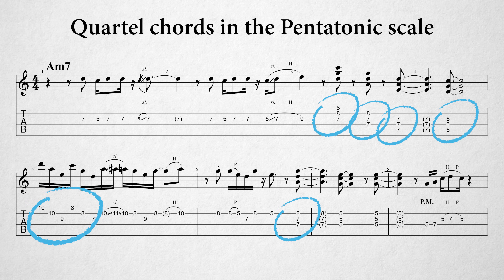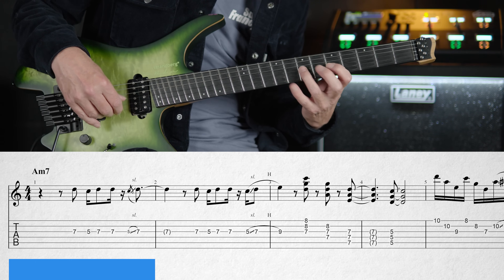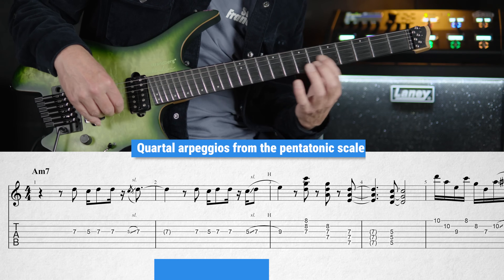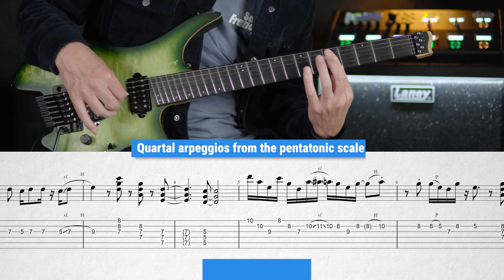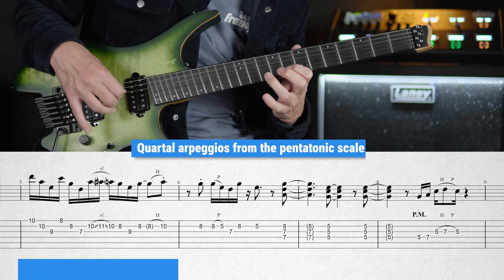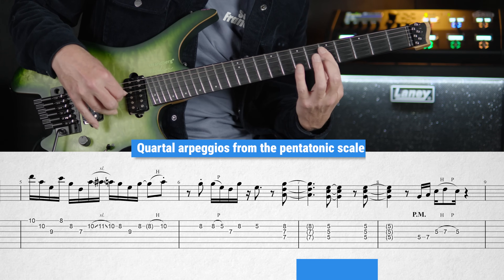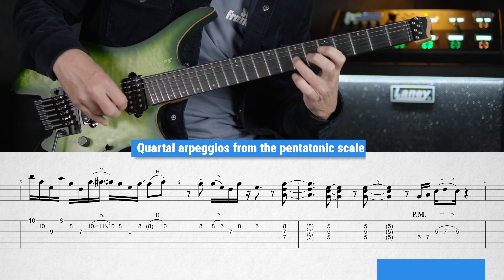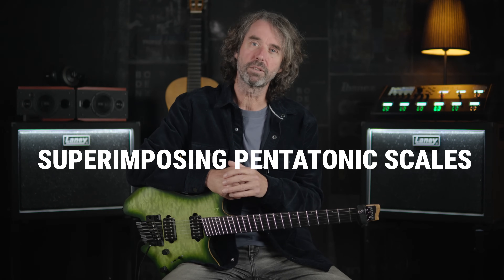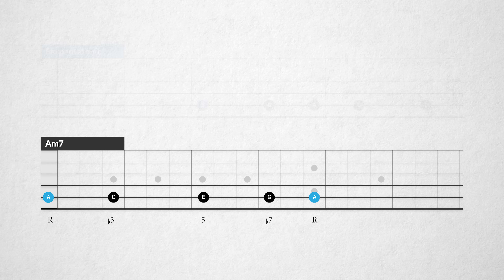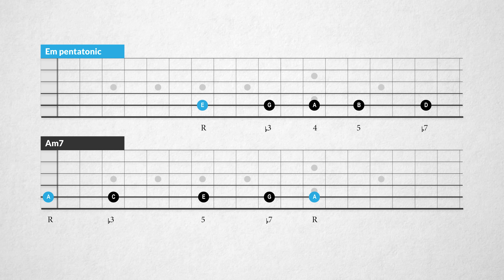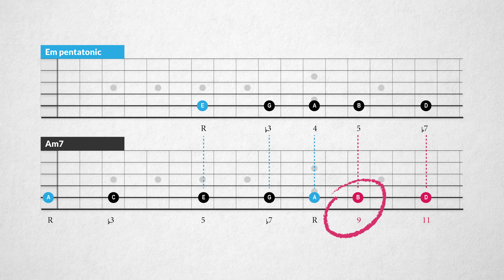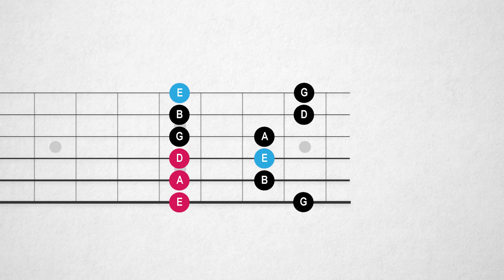Using just these three quartal arpeggios from the pentatonic scale, we already have changed our solo to a dreamy sound. If you watch my tutorial or ebook about superimposing pentatonic scales, you'll understand that we can play an E minor pentatonic scale over an A minor 7 chord to create a slightly different sound — that's because of the 9th, B, that is present in this E minor pentatonic scale. And this is interesting because now we can play the quartal arpeggios of the E minor pentatonic scale too.